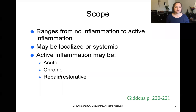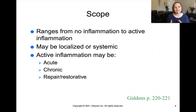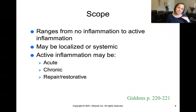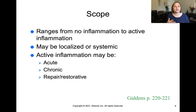The scope of this concept ranges from no inflammation to active inflammation. The inflammation itself can be localized to a specific area of the body, or systemic, meaning generalized inflammation throughout the body. Active inflammation can be acute — happening suddenly and short term — or chronic, meaning long term. Inflammation can also be used to repair or restore. For example, if a child skins their knee on the sidewalk, the area around that abrasion will look red and puffy — that's the body's healing response to localized tissue injury.